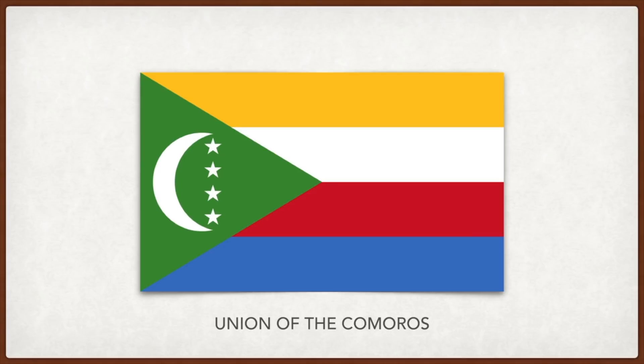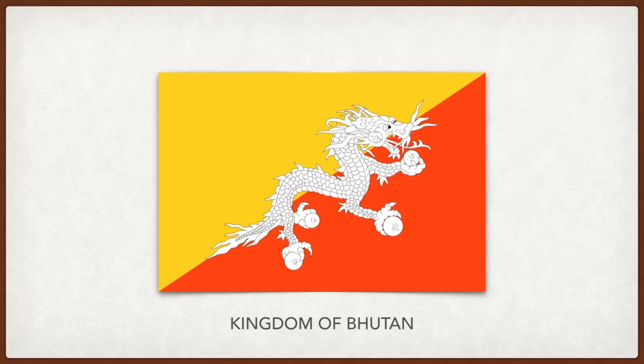Bhutan: the country is known as the Land of the Thunder Dragon — traditionally, the thunder in the mountains and valleys was believed to be the voice of dragons. The dragon in the center is white, symbolizing purity and loyalty; in its claws it holds jewels symbolic of national wealth and perfection. The yellow background symbolizes the power of the king, and the orange is for certain sects of Buddhism and the country's religious commitment.